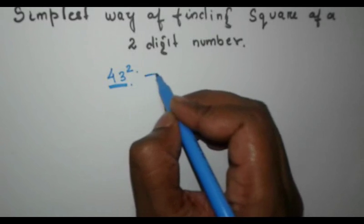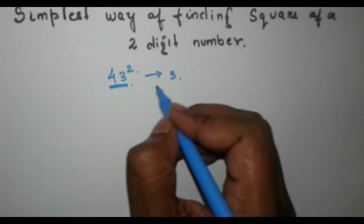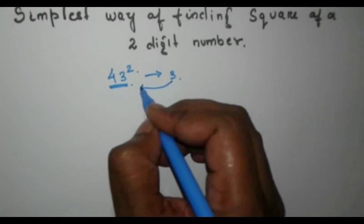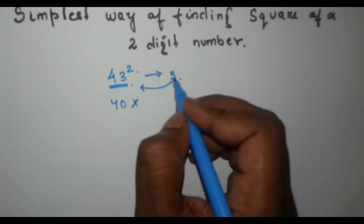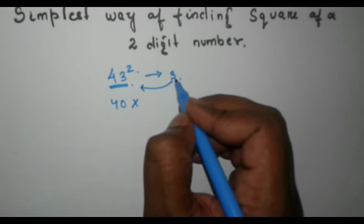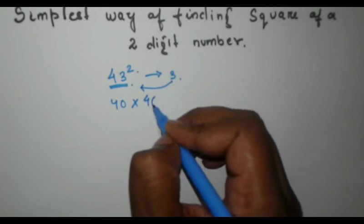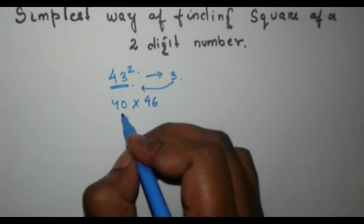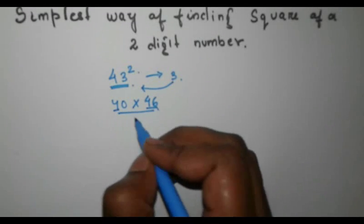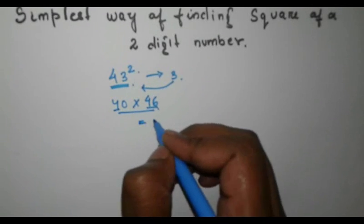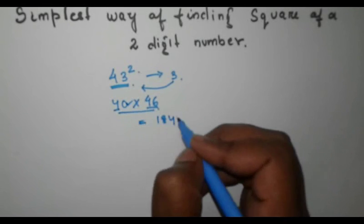Now we have to subtract 3 from 43, which gives us 40, and we also add 3 to 43, which gives us 46. So then we multiply 40 and 46. This is very simple because we multiply 46 by 4, which gives us 184, and we append a zero to get 1840.